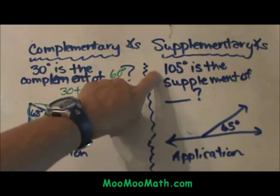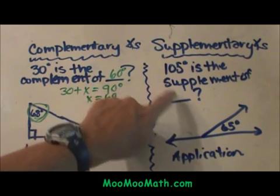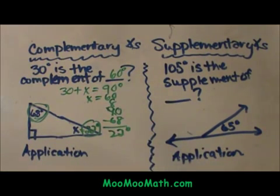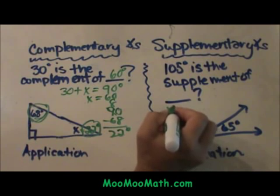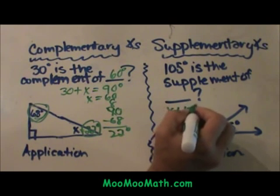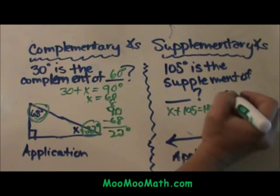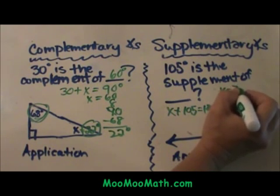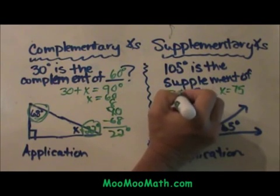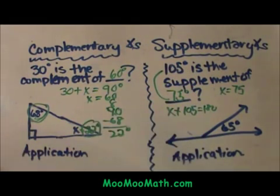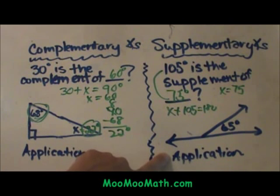So 105 degrees is the supplement of what angle? Same thing. We are going to take x plus our 105 and set it to 180. Subtract 105 from both sides so x is 75 degrees. So 105 and 75 are supplements of each other.